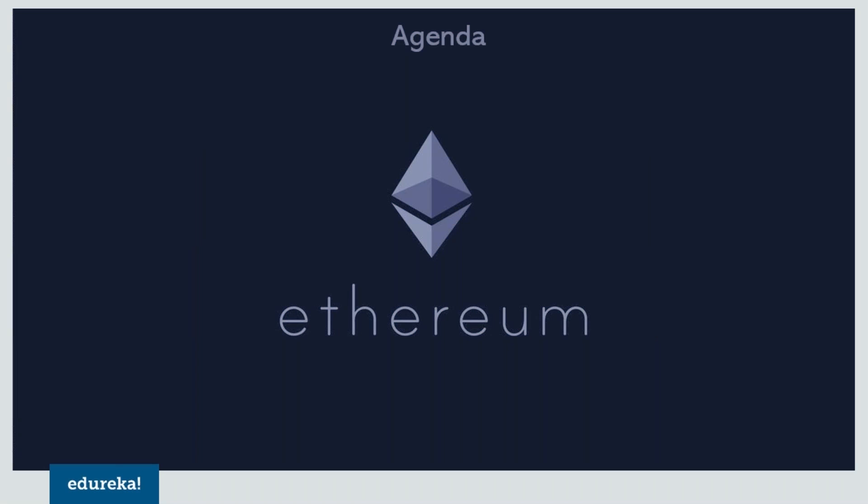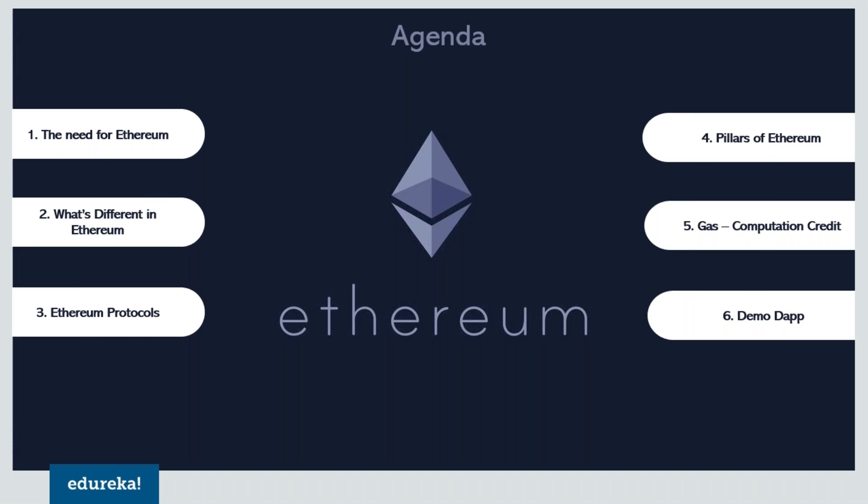Before we dive in, let me quickly tell you the topics that will be covered. First, we'll discuss the need for Ethereum and the vision behind it. Second, we'll cover differences between Ethereum and Bitcoin regarding block structure. Next, we'll discuss the various protocols that run Ethereum and the parts of its ecosystem. We'll also look at the concept of gas — the computation credit on Ethereum. Finally, we'll discuss decentralized applications and I'll show you a demonstration of a dApp running on a local test network, giving you insight into the architecture and deployment of such applications.